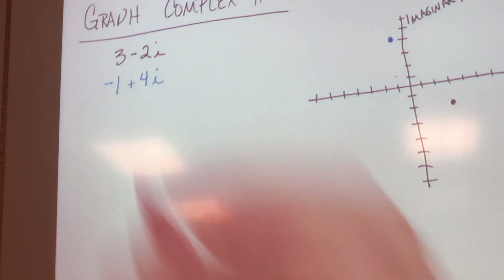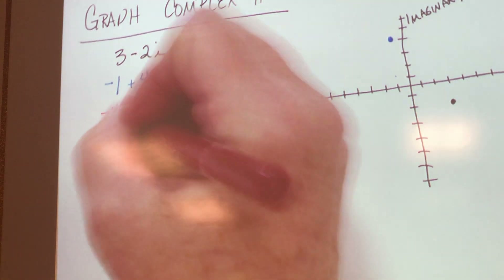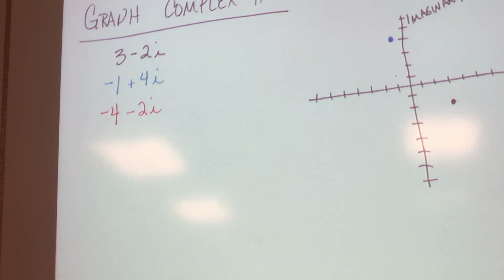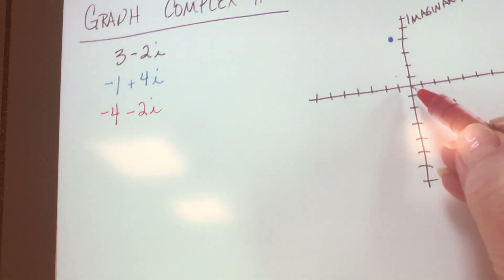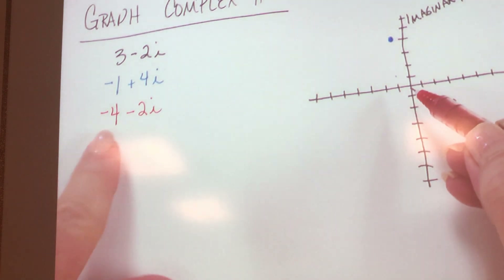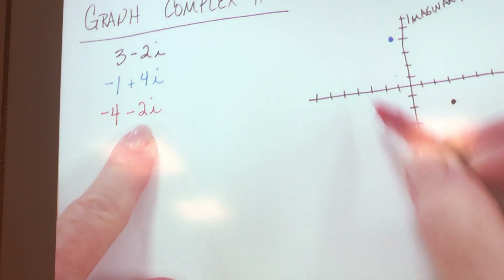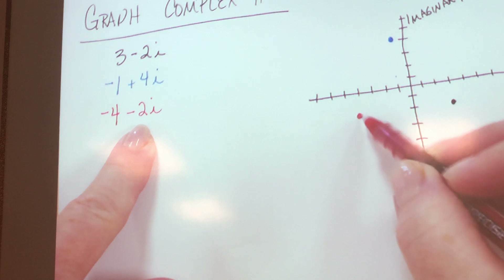Here's the next one — try this one: negative 4 minus 2i. I'm going to start at the origin. Where do I go first? To the left four — one, two, three, four. Then where do I go? Down two — one, two. So there's my point.